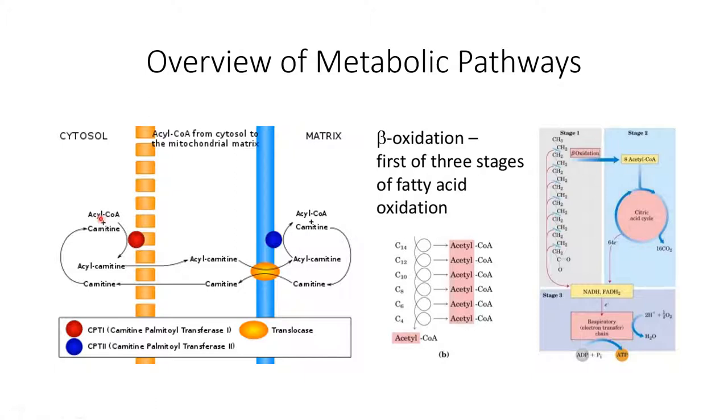In the next step, the acyl-CoA group is further combined with a carnitine group to form a fatty acyl-carnitine compound. This transesterification reaction is catalyzed by a carnitine palmitoyl transferase enzyme associated with the inner mitochondrial membrane, designated as CPT1. This acyl-carnitine group is recognized by the carnitine translocase protein found within the inner mitochondrial membrane, which pulls it into the mitochondrial matrix in exchange for free carnitine within the matrix.